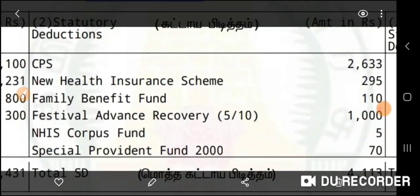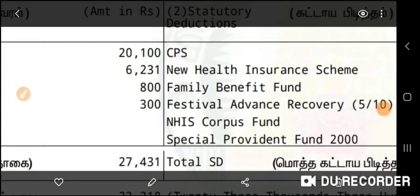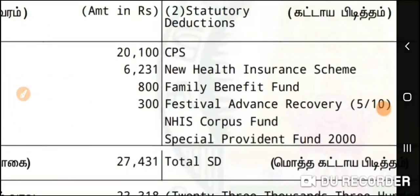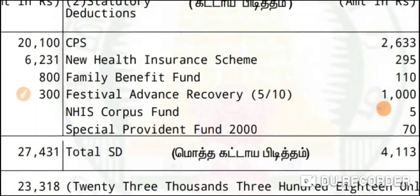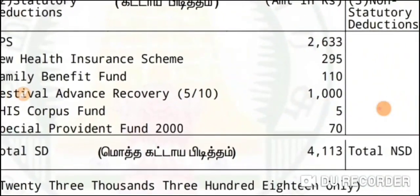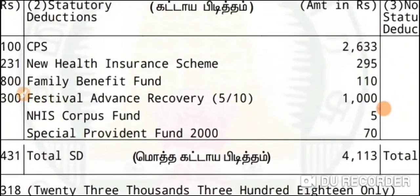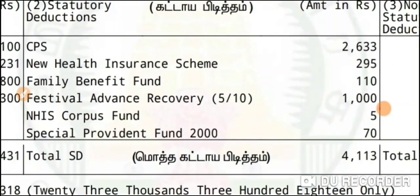CPS — Contributory Pension Scheme — you have pay plus DA, that's 10% of the percentage. So that's the New Health Insurance Scheme, 300.